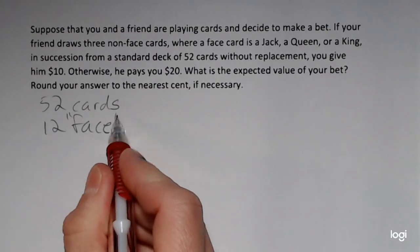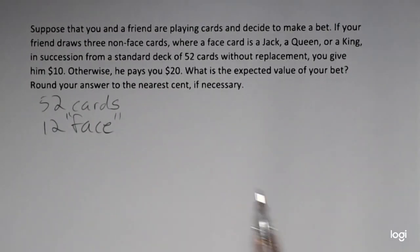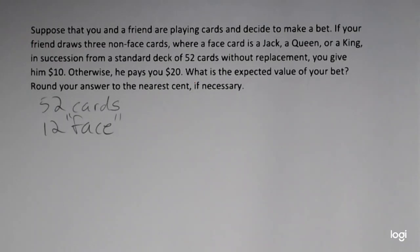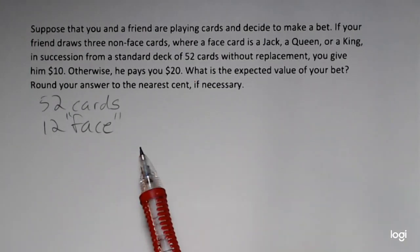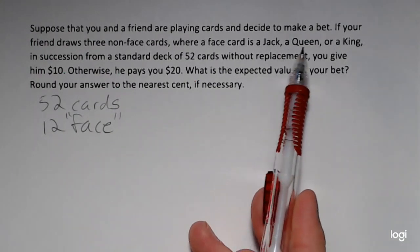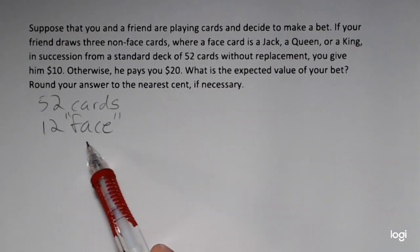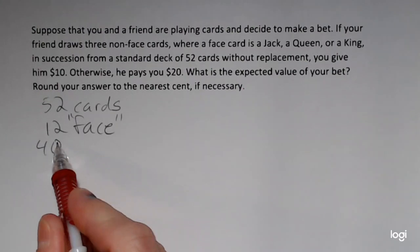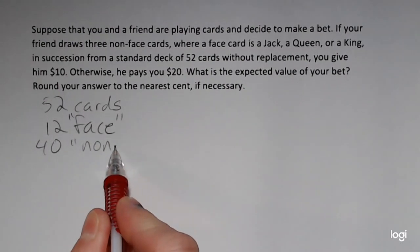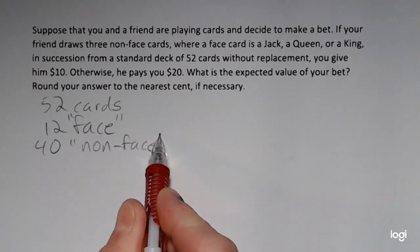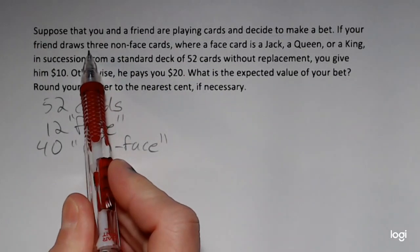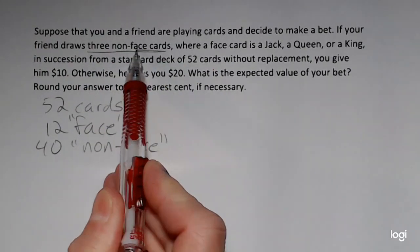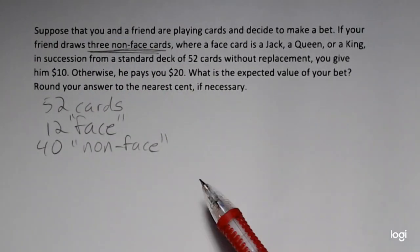Twelve of them are face: a jack, a queen, or king. And remember, there's four suits in a deck of cards. So four times three, three face cards is 12, so we have 12 face cards altogether. And then we have 40 non-face cards.